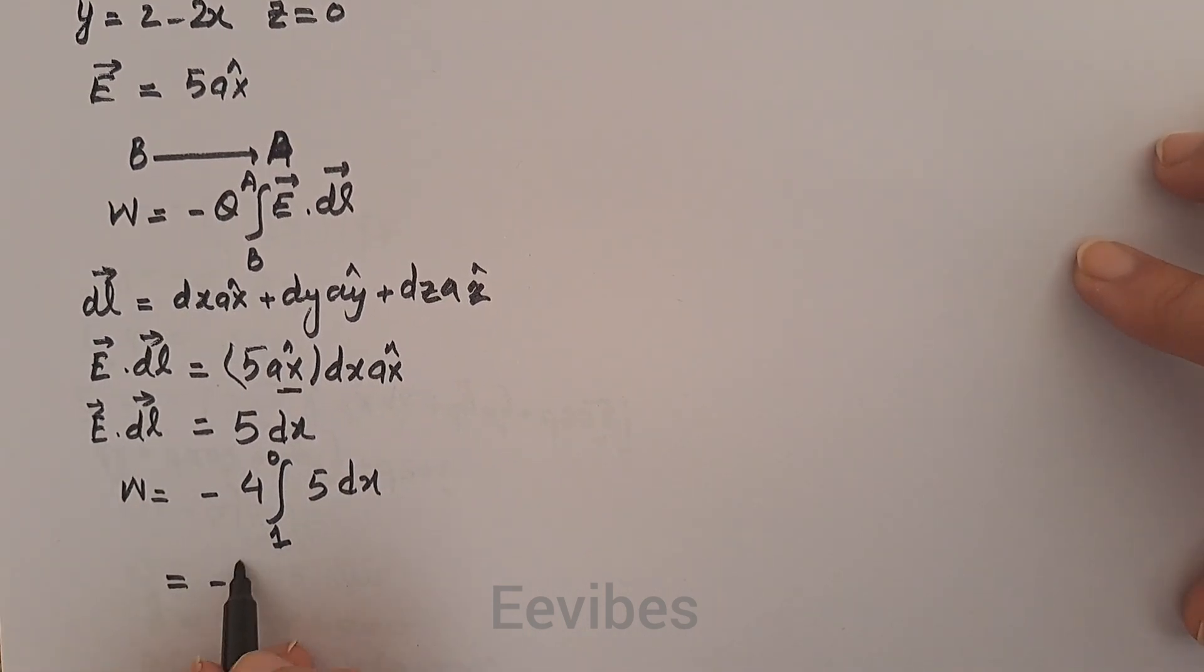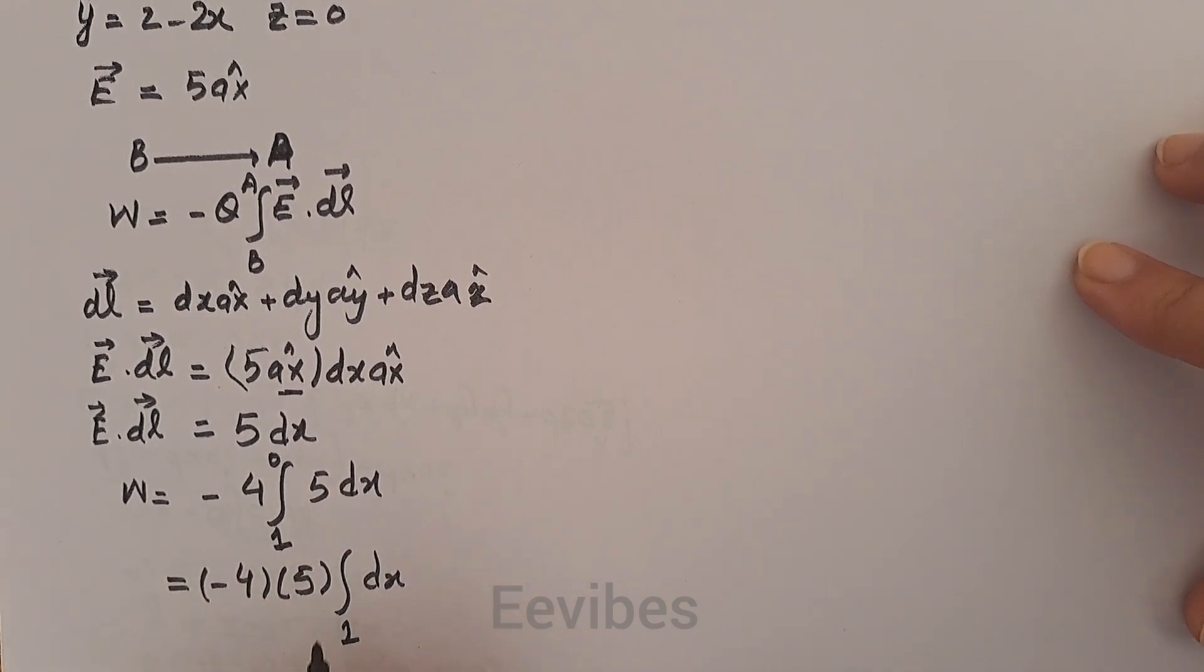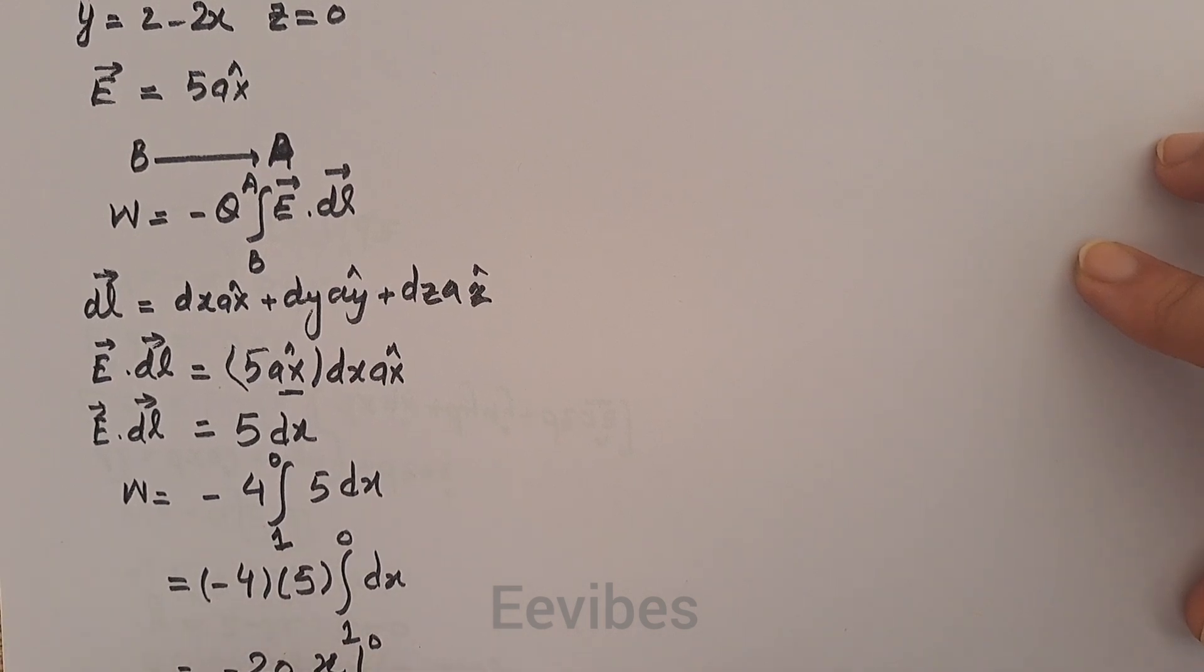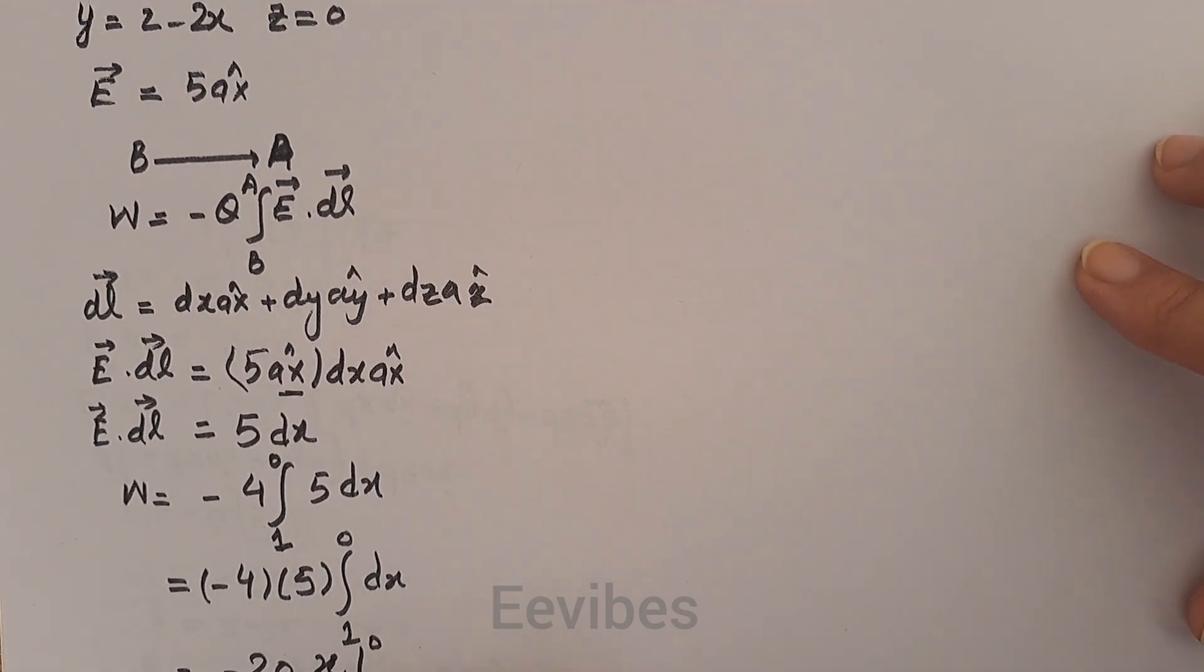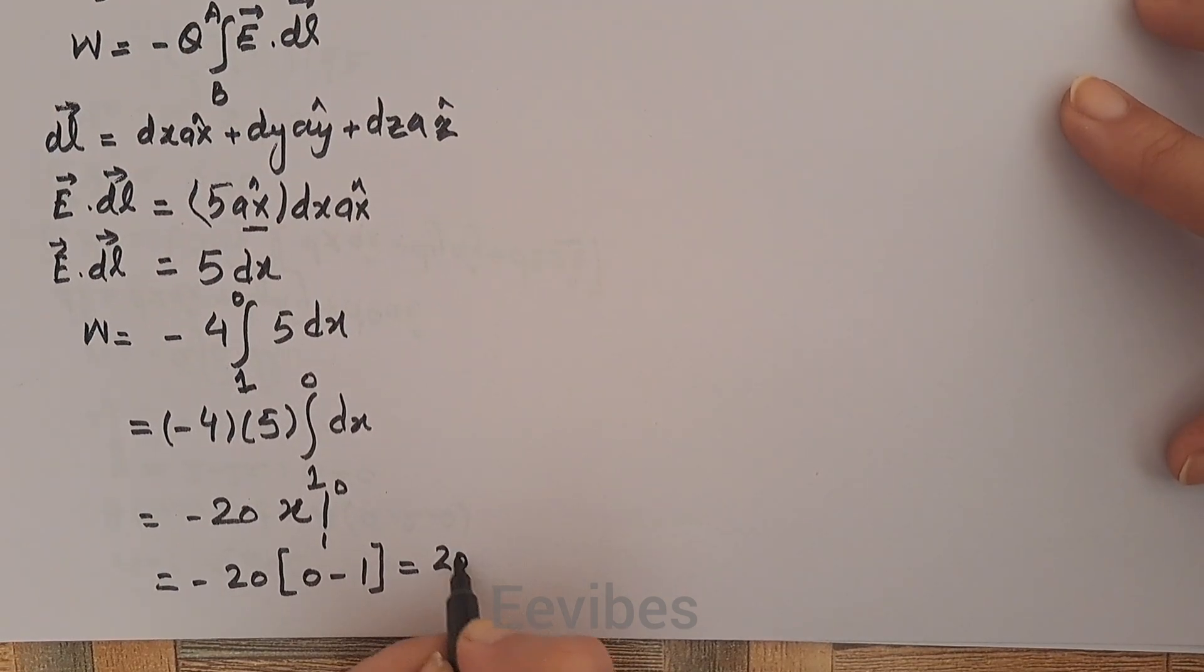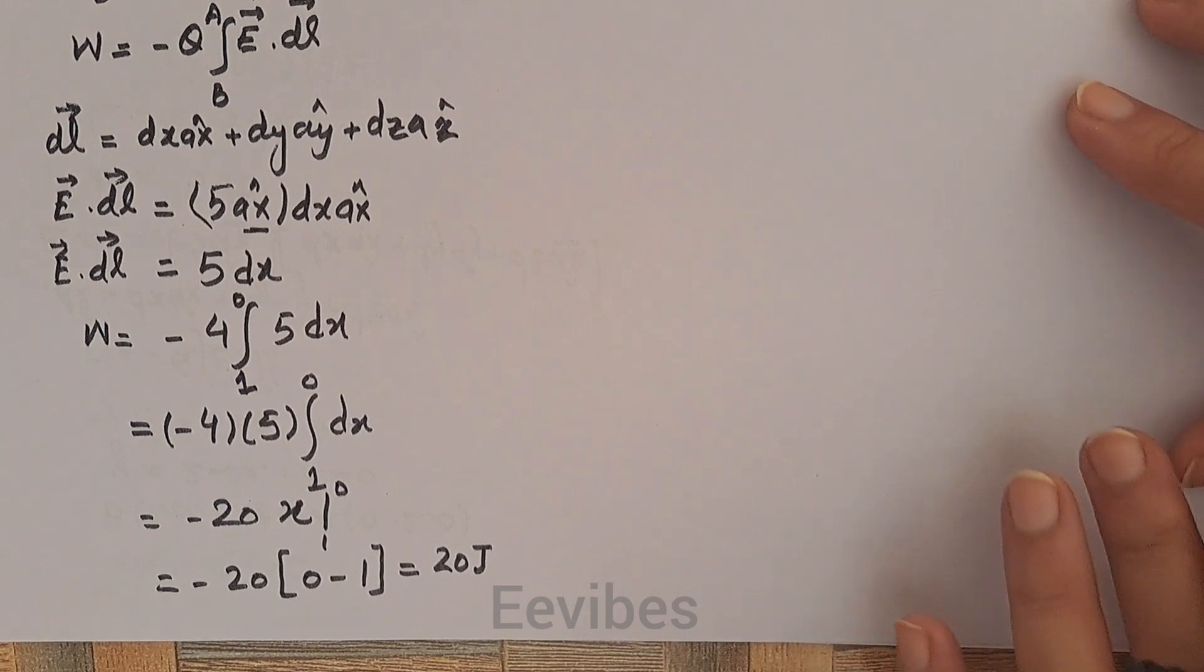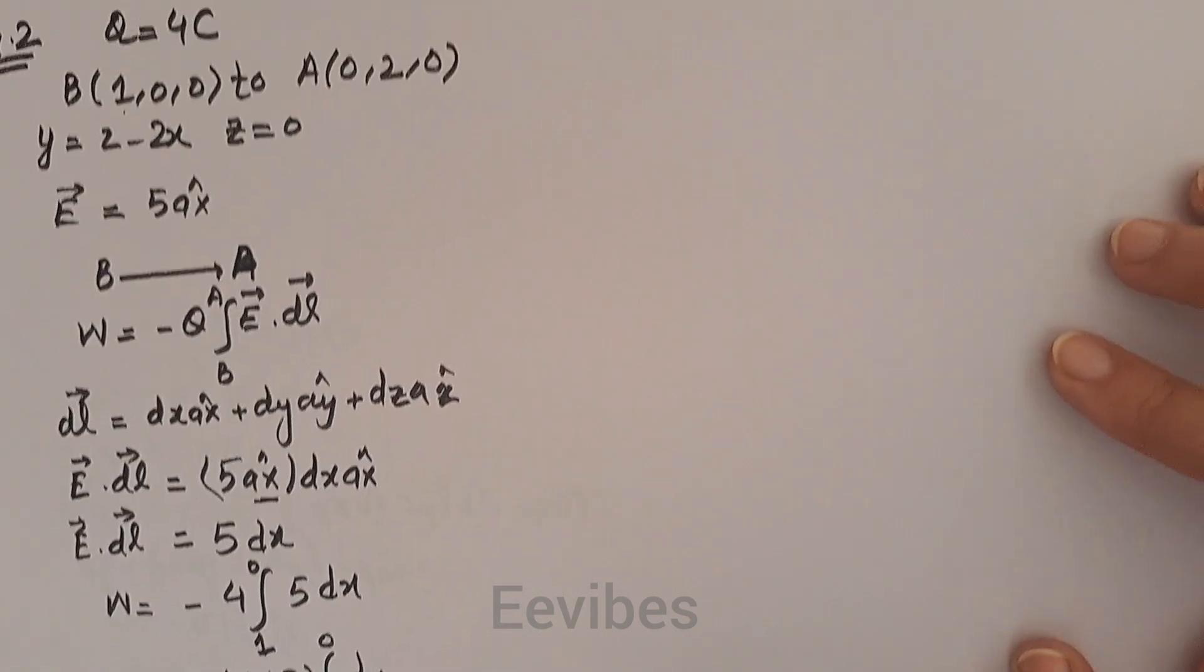Hence you will have -4. Since 5 is also constant, it can be taken out, and inside the integral only dx is left. So this becomes -20. When you apply the limit from 1 to 0, -20 times upper limit minus lower limit, this will ultimately result in 20 joules. This is the work done while moving the charge from B to A in the field of E. This is part one.